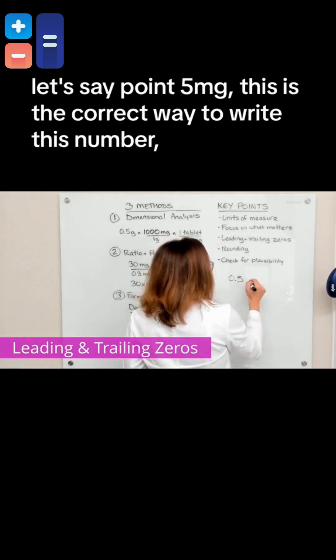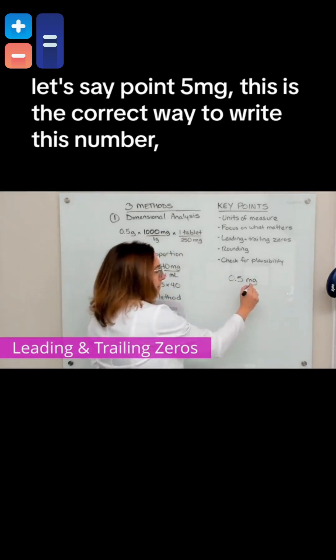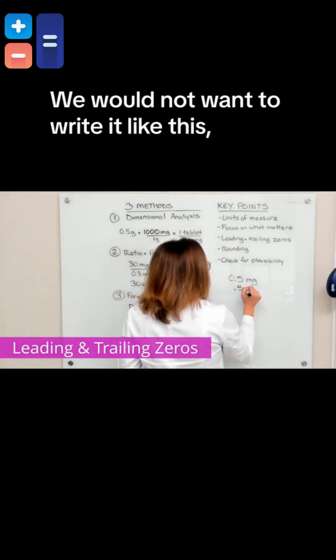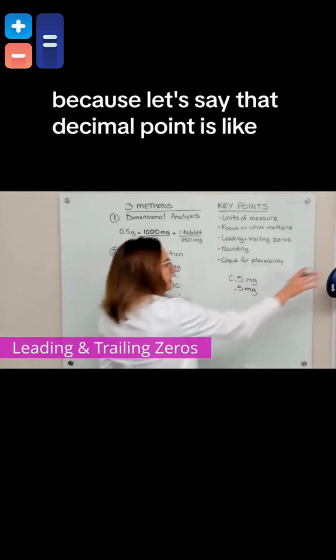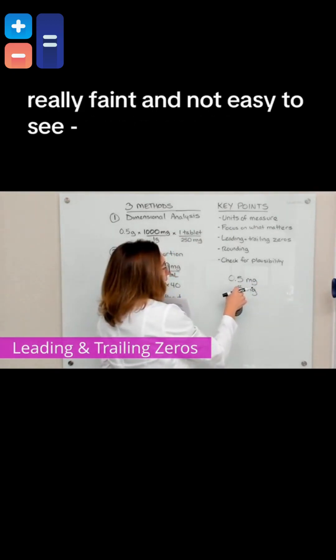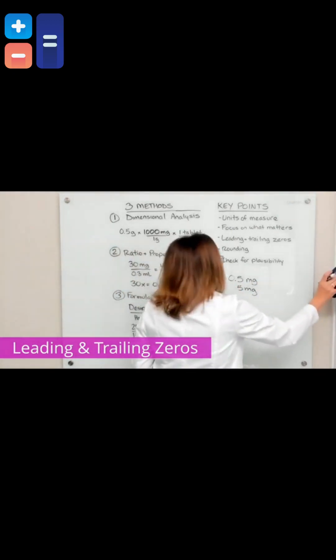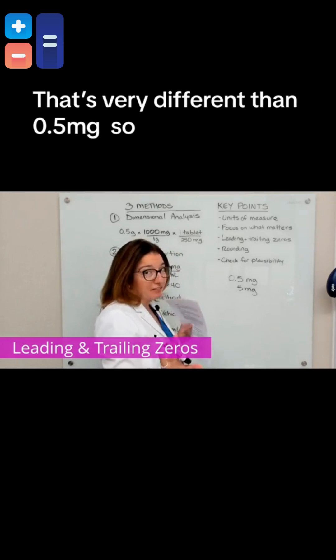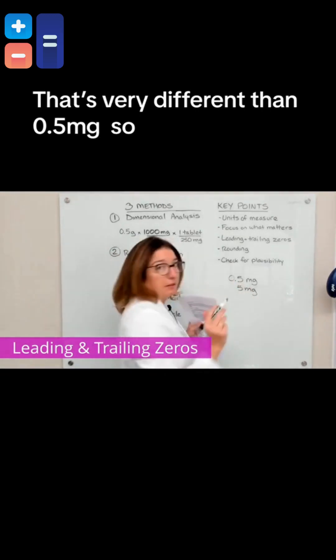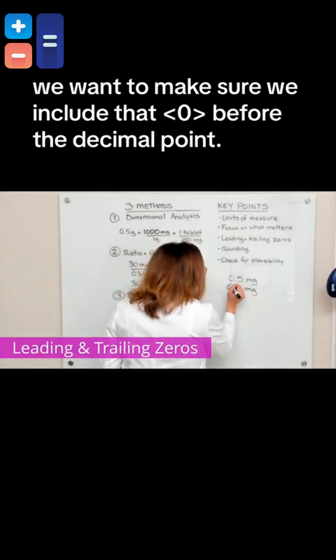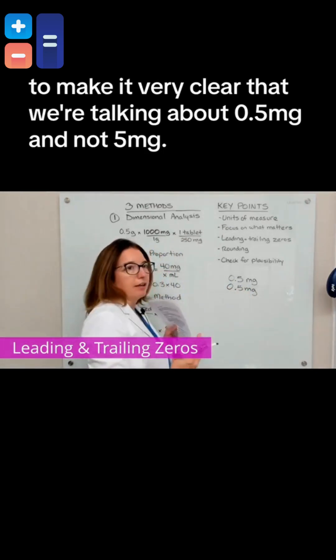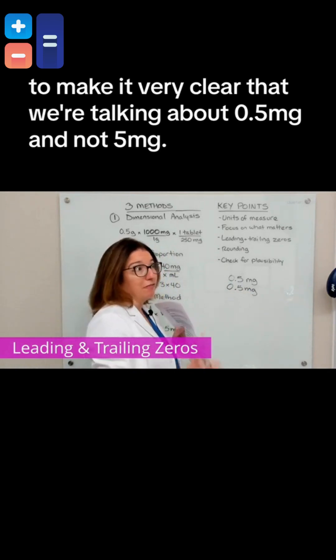If we have a number, let's say 0.5 milligrams, this is the correct way to write this number. We would not want to write it like this. Because let's say that decimal point is really faint and not easy to see. If someone looked at that, they may think it just says five milligrams. Well, that's very different than 0.5 milligrams. So we want to make sure we include that zero before the decimal point, to make it very clear that we're talking about 0.5 milligrams and not five milligrams.